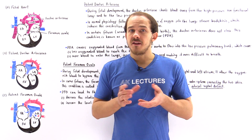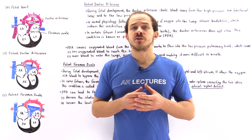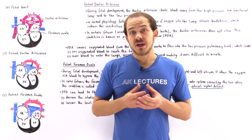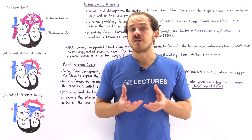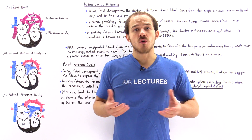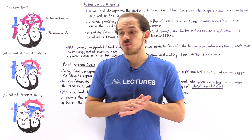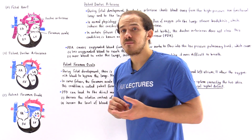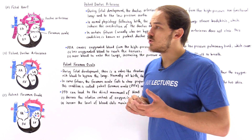Inside the developing fetus, there are two important shunts used by the circulatory system to redirect blood away from the non-functional lungs and toward the functional organs, such as the brain. These two shunts include the foramen ovale and the ductus arteriosus.